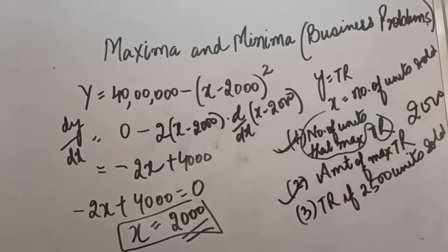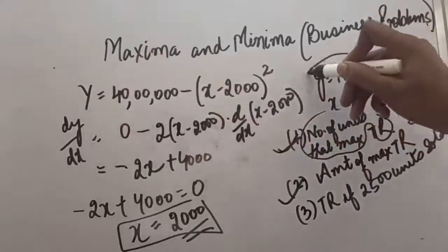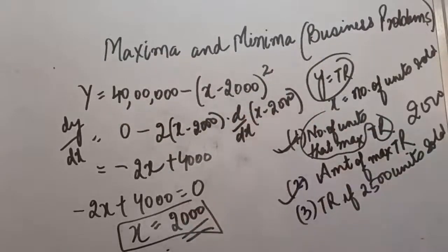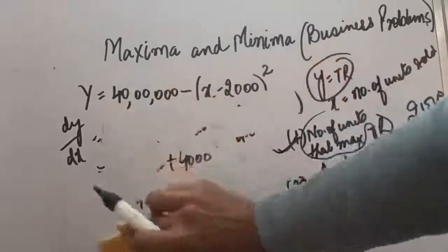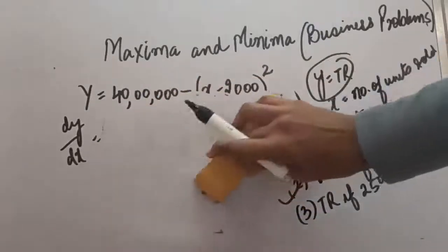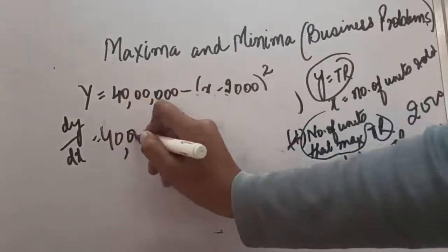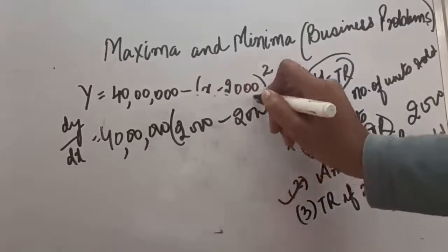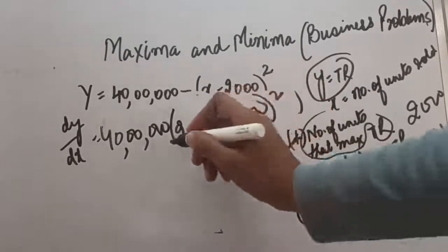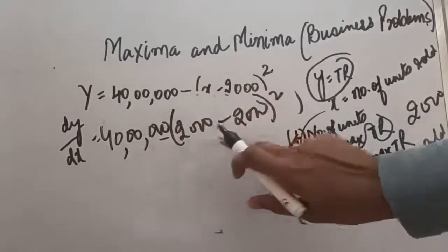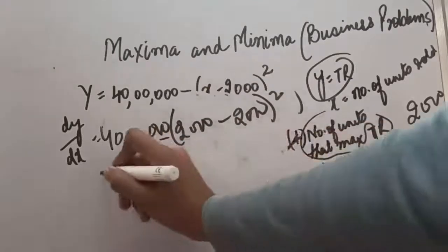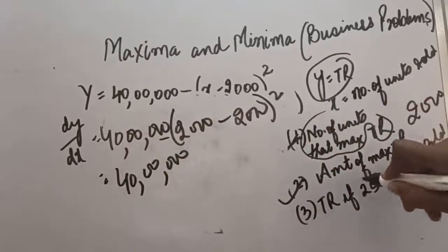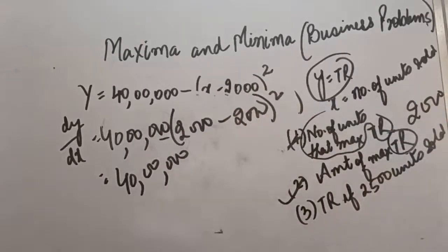The second part asks for the amount of maximum revenue. The total revenue y is our function, so we put x equals 2000 into the equation. It becomes 40 lakh minus 2000 minus 2000 squared. Since 2000 minus 2000 is 0, its square is also 0. So the maximum total revenue is 40 lakh.